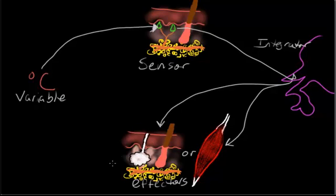The effect of those is that it will change the variable. The change in the variable will be detected by the sensor. The sensor will speak to the integrator. And whatever was going on will be ceased once that activity is brought back within regular homeostatic range.